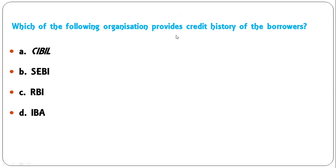Which organization provides credit history of the borrowers? Options: CIBIL, CIVIL, RBI, or IBA? The correct answer is CIBIL — C-I-B-I-L — which provides the credit history of borrowers.